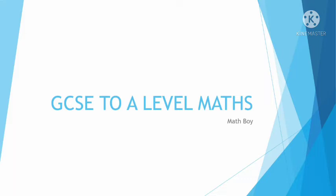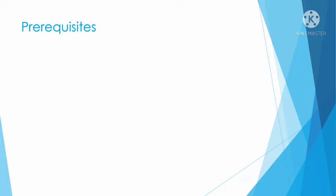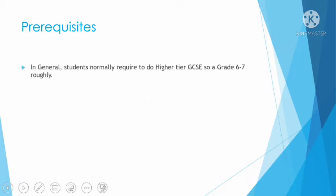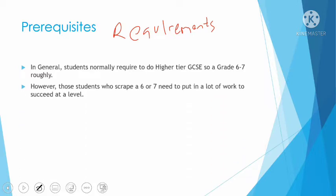So the prerequisites — basically means requirements. Every college or academy is different, but in general students normally require higher tier GCSE, so a grade six or seven roughly. If you're scraping a six or seven, you need to put in a lot of work to succeed at A-level, because trust me, A-level maths is hard — it's not easy at all.